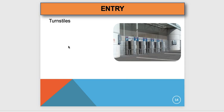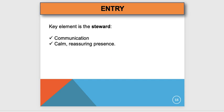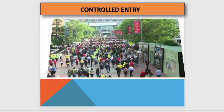The turnstile counts people, so management always know how many are in the stadium. The key elements for stewards are: communication, being proactive, observing, being calm and reassuring, and having a presence. If a situation is brewing, don't panic — go over calmly and manage it. People see your high-vis jacket as a sign of authority and expect a good answer from you.